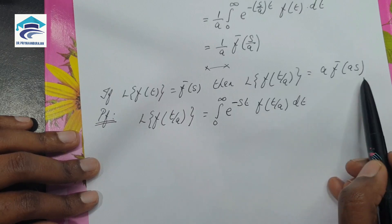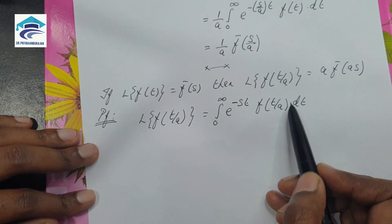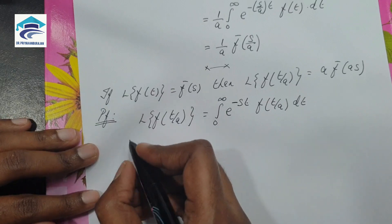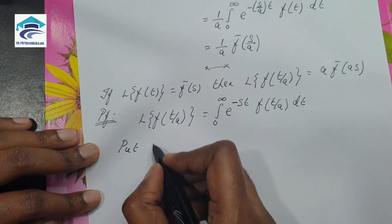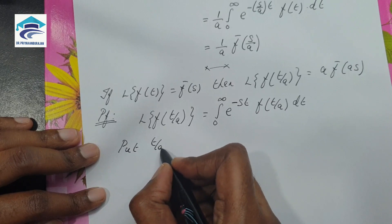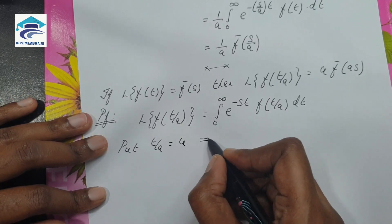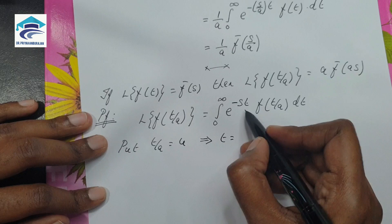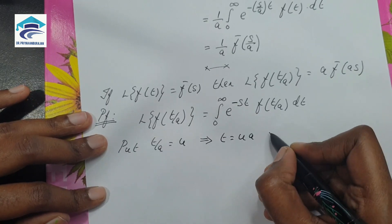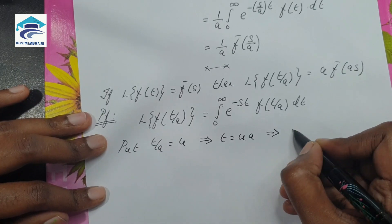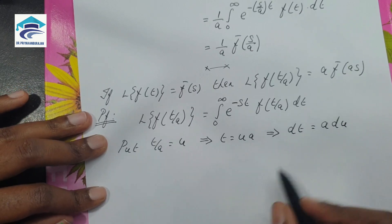Looking at the right hand side, we do not have any fractions. So we are going to take t/a as some other variable. Let t/a equal u. This implies t is equal to ua, which implies dt is equal to a times du.